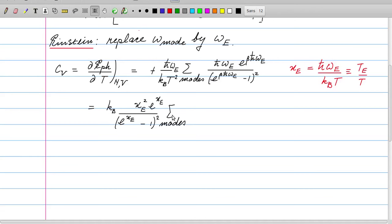k_b times x_e squared e to the power x_e divided by e to power x_e minus 1 squared. Then there's a sum of the modes. We could extract this factor from the sum because it has the same value for each mode, since we replaced the actual frequency per mode by the single number, the Einstein frequency.